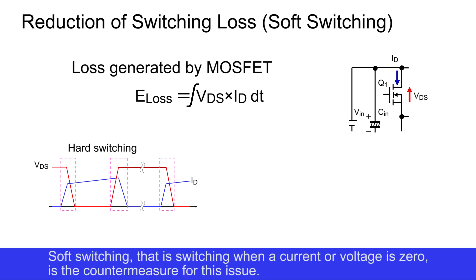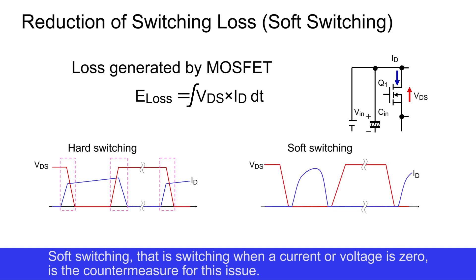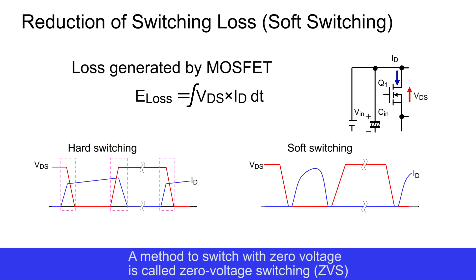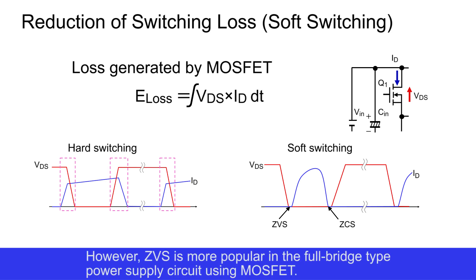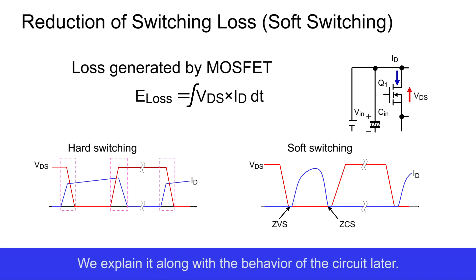Soft switching — that is, switching when a current or voltage is zero — is the countermeasure for this issue. A method to switch with zero voltage is called zero voltage switching, ZVS, and that with zero current is zero current switching, ZCS. However, ZVS is more popular in the full bridge type power supply circuit using MOSFETs. We will explain it along with the behavior of the circuit later.